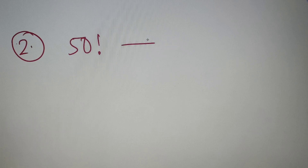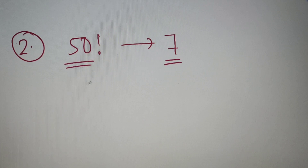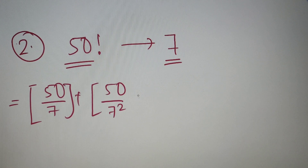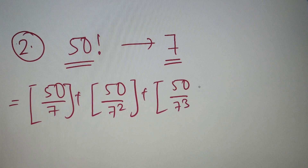According to our second question, we have to find the number of trailing zeros of 50 factorial when it is converted to base 7. We just have to find the highest power of 7 in 50!. This is equivalent to finding the highest power of a prime in n factorial, and the formula is the sum of the greatest integer values of 50/7 + 50/7² + 50/7³. We stop at 7³ because 7³ = 343, which is greater than 50.